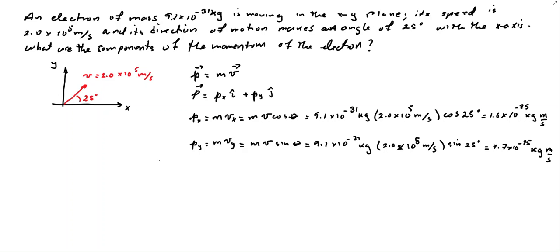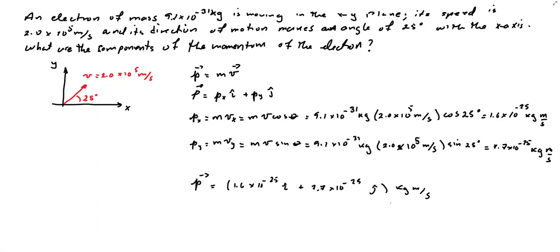So now we are ready to write our linear momentum p in terms of its components. The linear momentum is equal to 1.6 times 10 to the negative 25 i plus 7.7 times 10 to the negative 25 j, and all this is in kilograms meters per second. This is the solution for this first problem — it was a straightforward problem where we found the components of the momentum of the electron, knowing its mass, velocity, and trajectory angle.